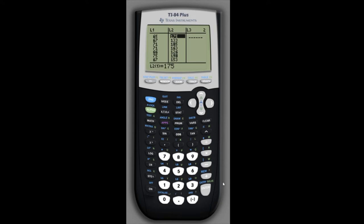Now if we go back under the stat menu we want to calculate, so we'll scroll over to the calc menu and we want linear regression. The form we've been using is this number four linreg ax plus b, so a is the slope and b is the y-intercept.